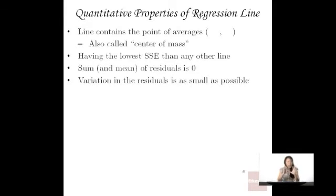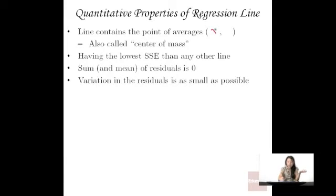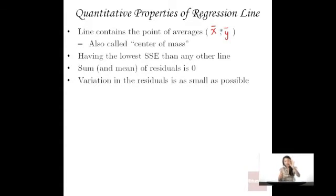We know what it means quantitatively to be the regression line — it means having the lowest sum of squared errors. But there are some other quantitative properties that come along. One important property is that the regression line also contains the point of averages: the average of all your X's and the average of all your Y's. This point is often called the center of mass. You just take the average of your X's and the average of your Y's — X-bar comma Y-bar is your point of averages. This line has the lowest SSE of any other line that also contains this point of averages.